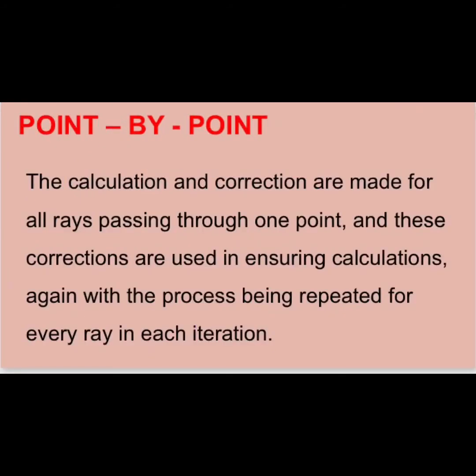In the point-by-point method, calculations and corrections are made for all rays passing through one point. These corrections are then used in subsequent calculations, with the process being repeated for every ray in each iteration.